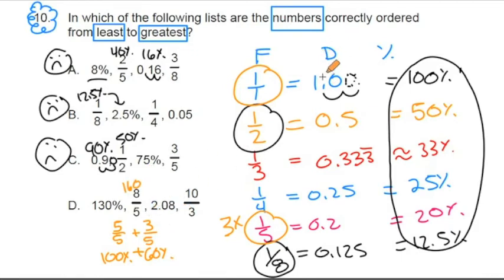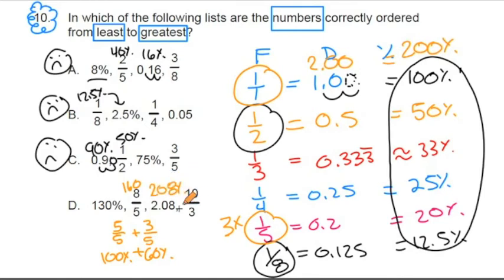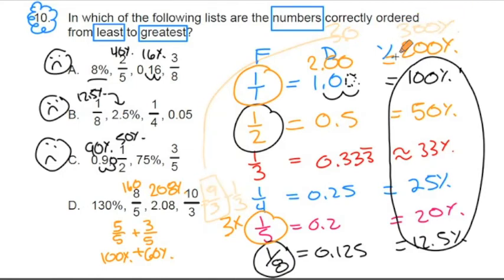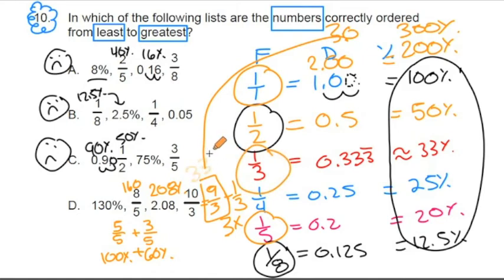2.08 is like two wholes, which would be 200%, so 2.08 is 208%. The last number, 10/3, can be rewritten as 9/3 plus 1/3. 9/3 is 3, or 300%. And 1/3 is one of our core fractions at 33%. So 10/3 is 333 and one-third percent.